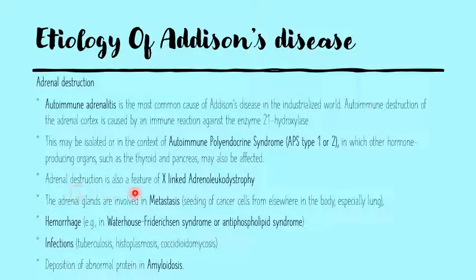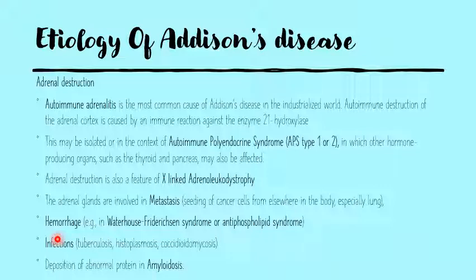Adrenal destruction is also a feature of hereditary diseases such as X-linked adrenal leukodystrophy. The adrenal glands could also be involved in metastasis, where cancers from elsewhere seed into the adrenal glands and take over the parenchyma. It could be due to hemorrhage such as in Waterhouse-Friderichsen syndrome or antiphospholipid syndrome, or due to disseminated systemic infections like tuberculosis, histoplasmosis, and coccidioidomycosis — the latter two being fungal diseases. Lastly, it could be due to amyloidosis, involving the deposition of abnormal proteins in the adrenal parenchyma.